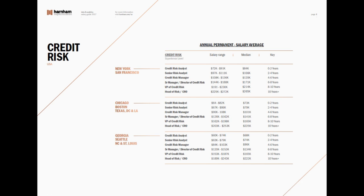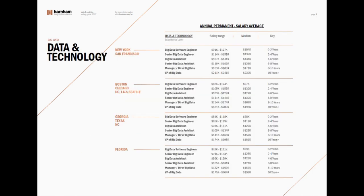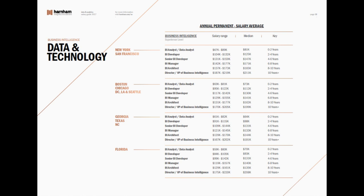The 2017 guide shows different locations — Chicago, Boston, Texas, DC, and LA — as well as Georgia, Seattle, NC, and St. Louis. I personally fall within North Carolina because I live in Greensboro, and I wanted to walk through a specific use case for my anecdotal experience. In NC, a business analyst starts out making $61,000 to $82,000 a year, with an average of $64,000.